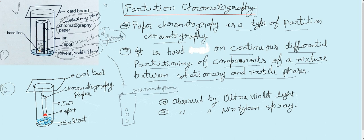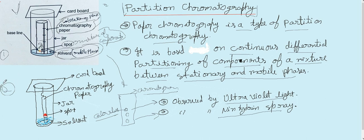We observe the different spots. If the spots are colorless, we observe them using ultraviolet light. Another method to detect these spots is by using ninhydrin spray.